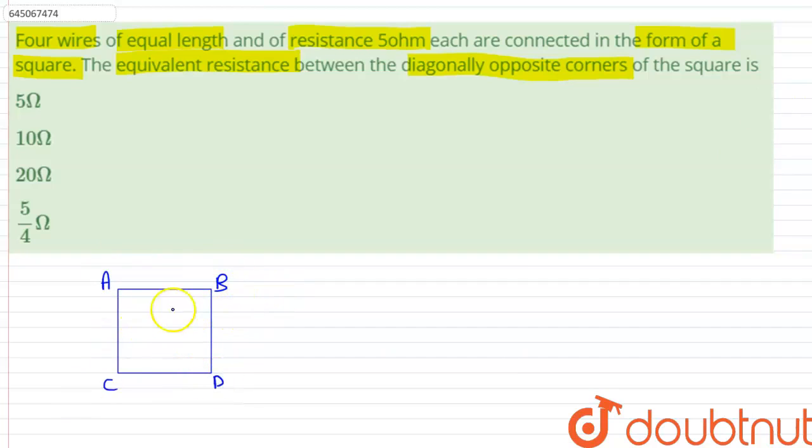The question is asking us to find out the equivalent resistance between point C and point B. Therefore, the equivalent resistance between C and B will be given by the parallel combination of both of these series combinations of 5 ohm resistances.